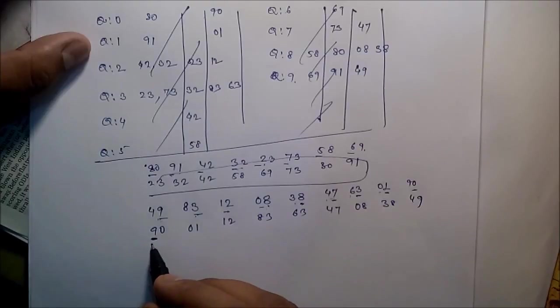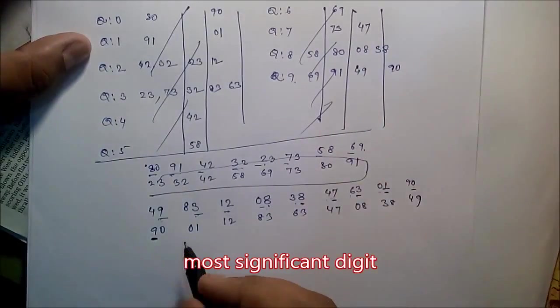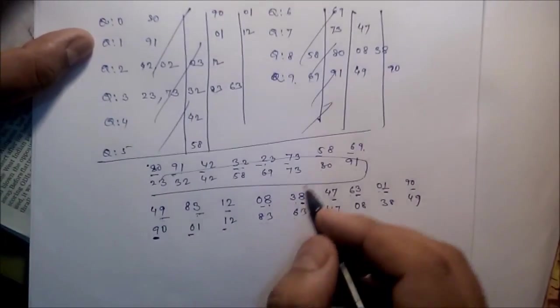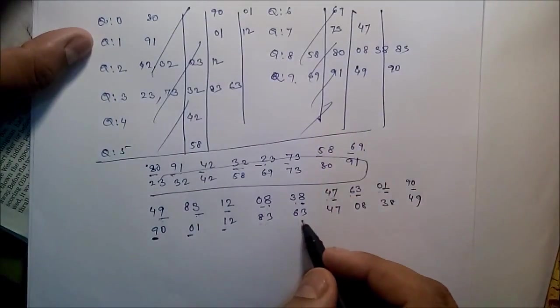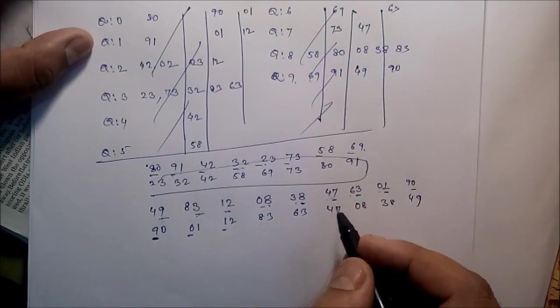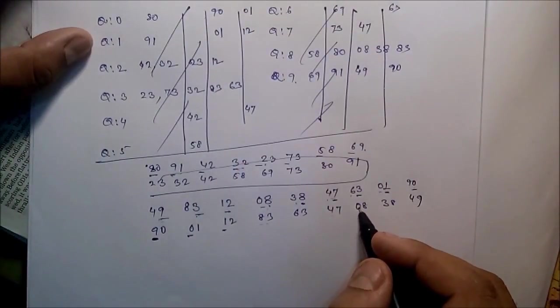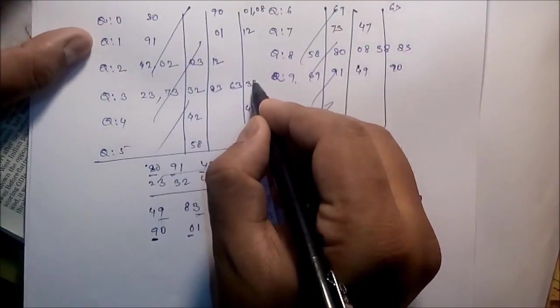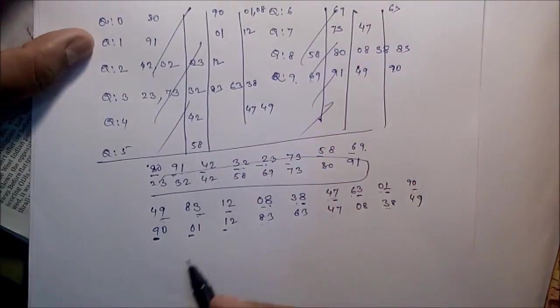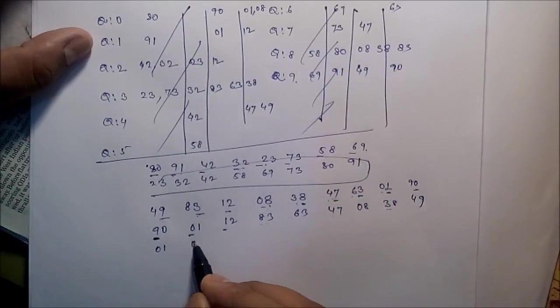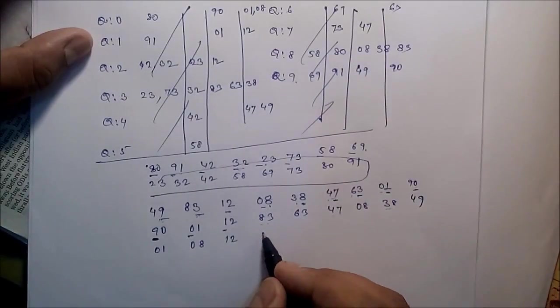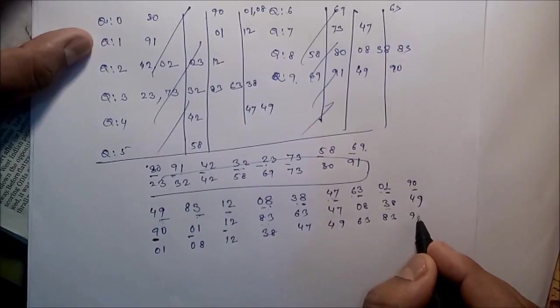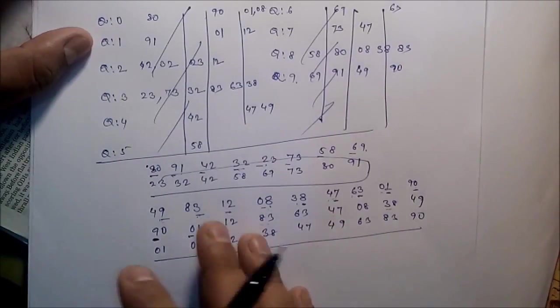Now once again, now due to this 9, now most significant bit. Now write down the data: 01, 08, 12, 38, 47, 49, 63, 83, 90. And the data is in sorted order.